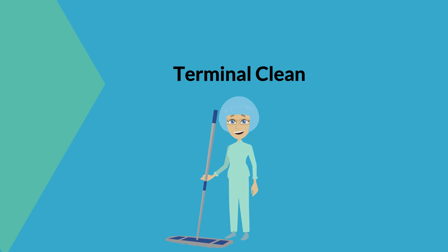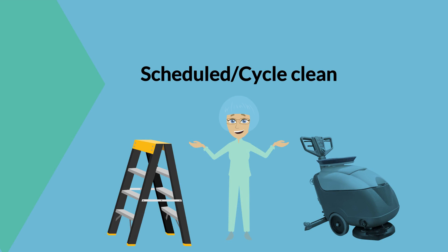Terminal clean is cleaning completed after the last case in the operating suite at the end of each day it is used. Scheduled cleaning or cycle cleaning is special intermittent cleaning projects such as washing the ceilings and walls and scrubbing the floors in the operating rooms. This cleaning should be integrated as scheduled during the routine terminal clean.